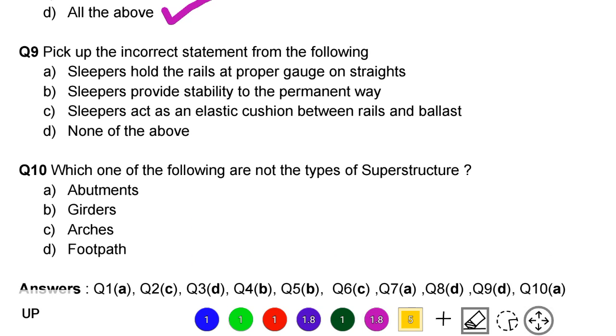Next question: pick up the incorrect statement from the following. Option A: sleepers hold the rails at proper gauge on straights. Option B: sleepers provide stability to the permanent way. Option C: sleepers act as an elastic cushion between rails and ballast. Option D: none of the above. The correct answer is option D, none of the above.